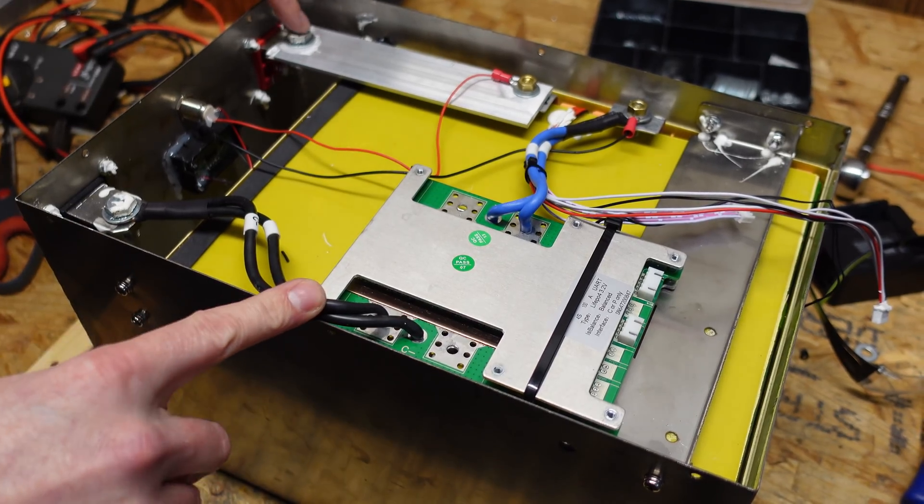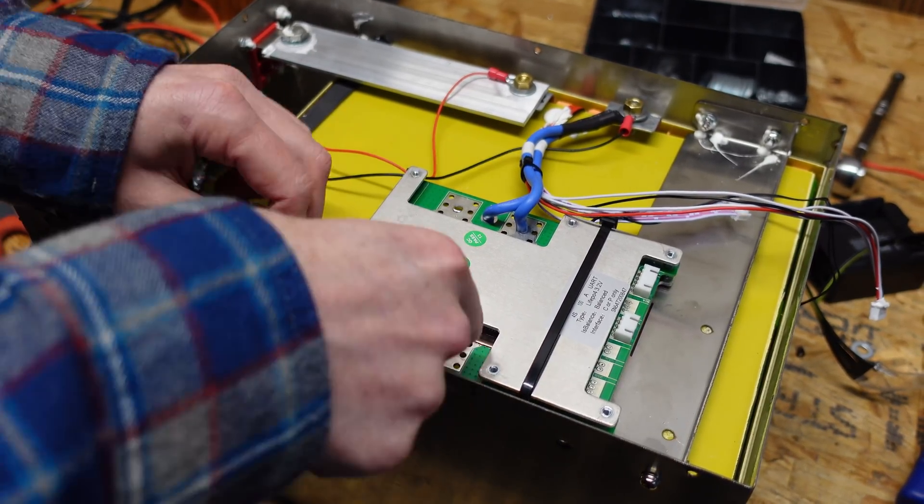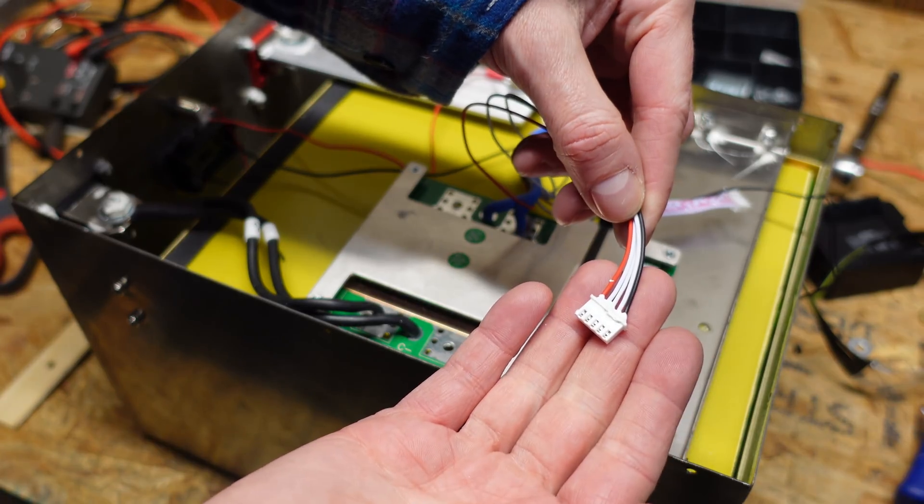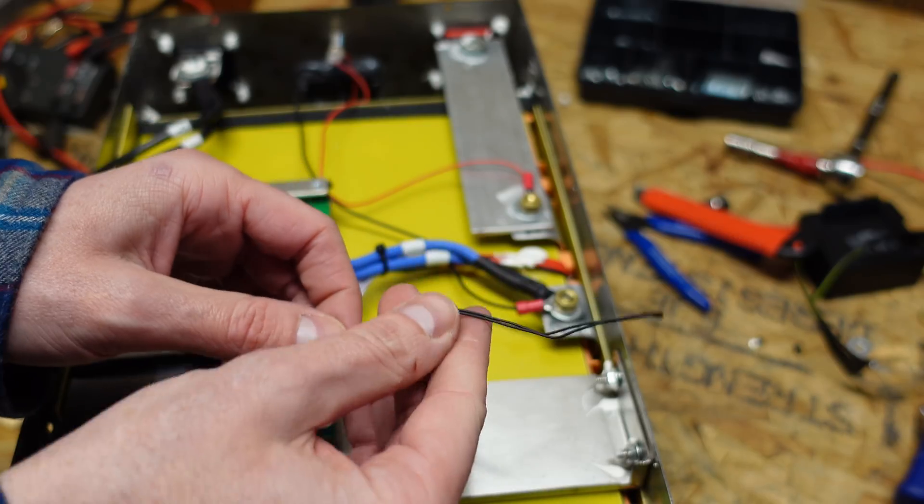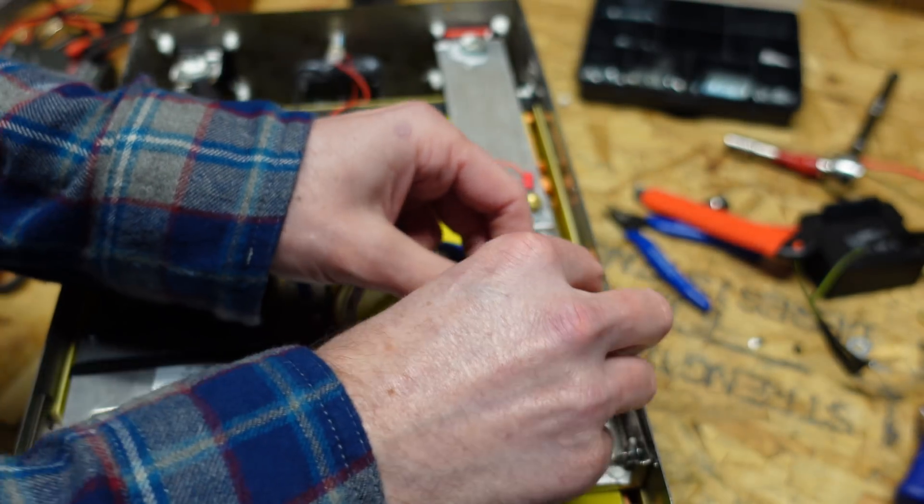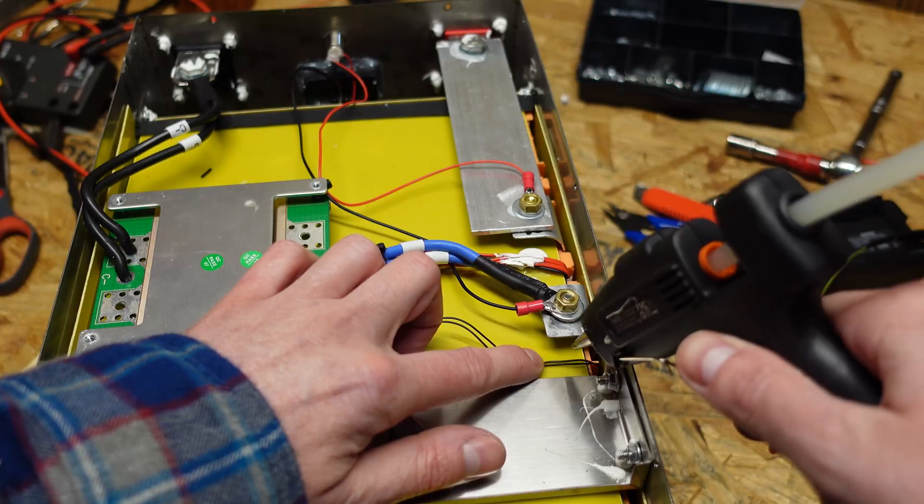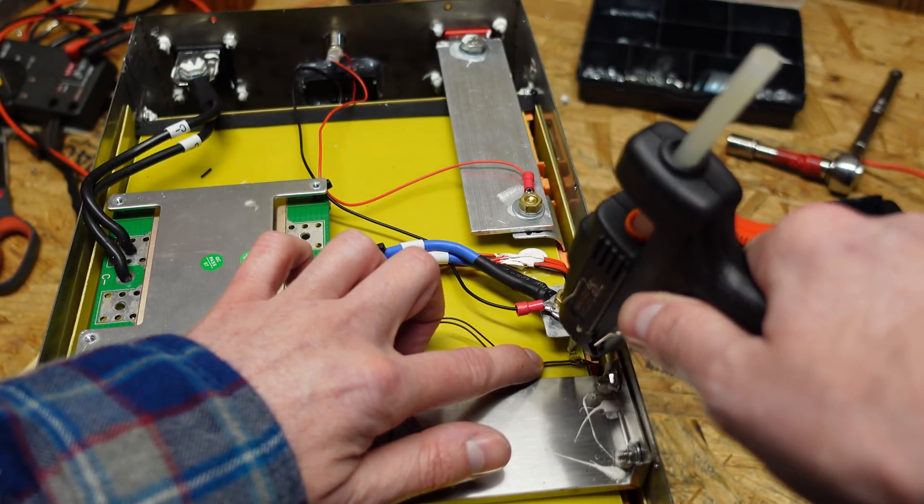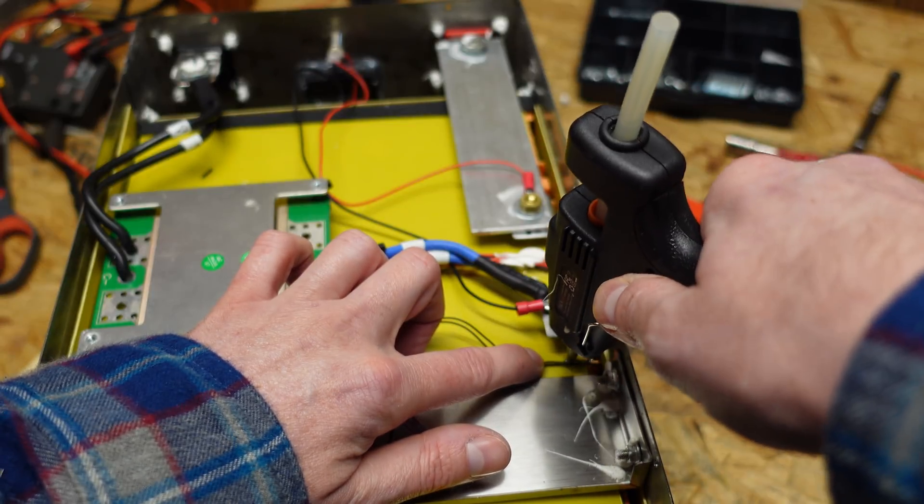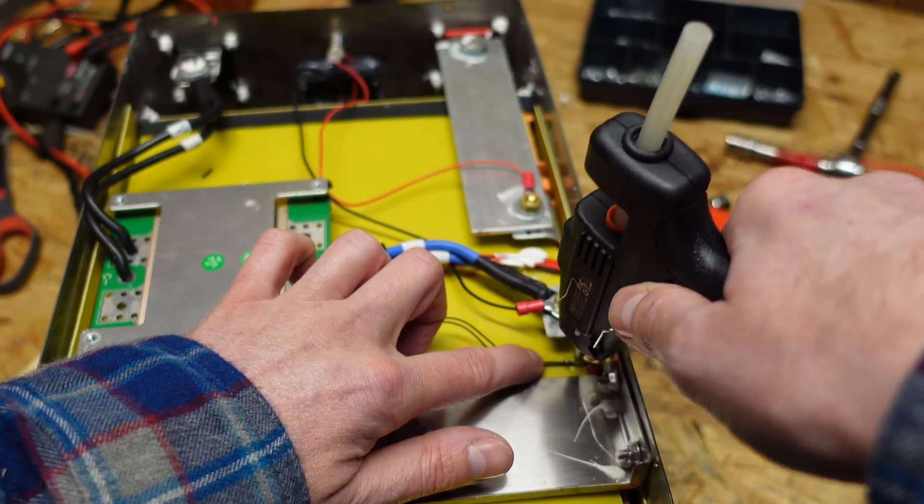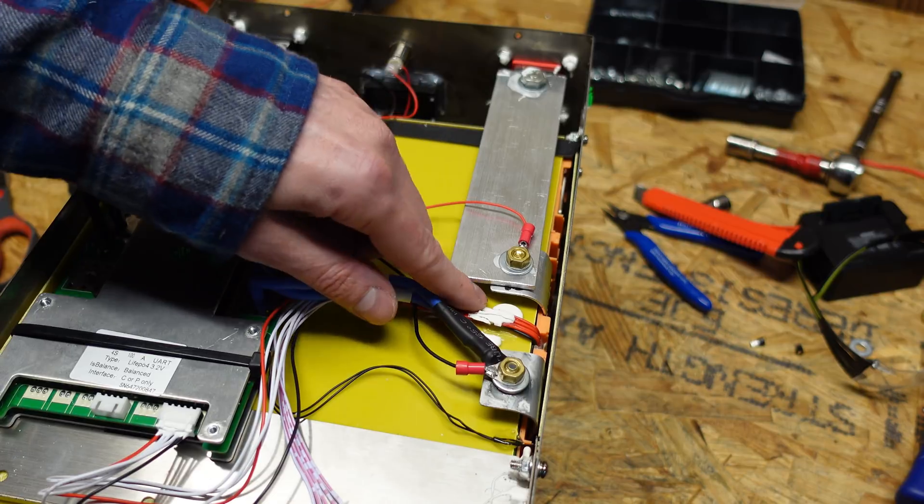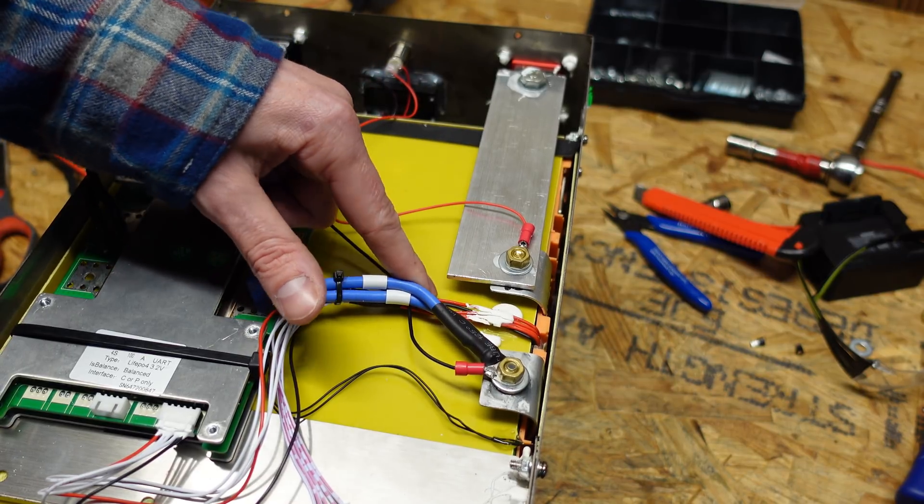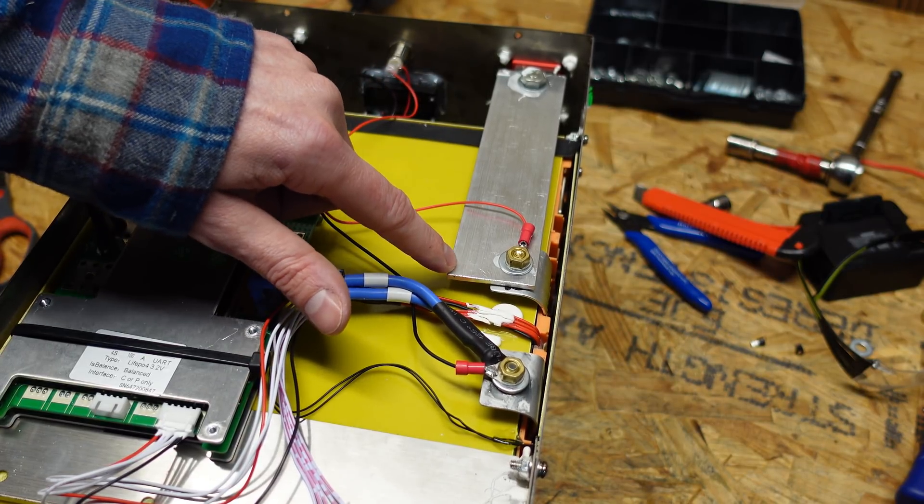Now that all the connections are in place and the bolts are tightened down, we are ready to plug in the balance lead for the BMS. I'm going to take this temperature sensor and fish it down the side so it's above the terminal of the batteries here. Then just hold those wires in place with a little bit of hot glue. I'm also going to put a little bit of hot glue over these BMS leads here too, because I don't want those to come loose and rub against this bus bar.